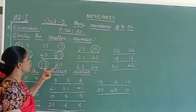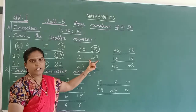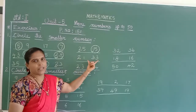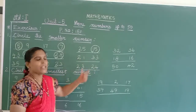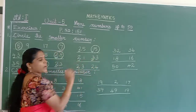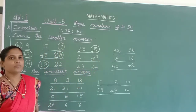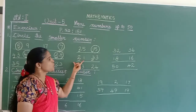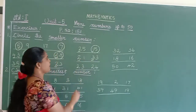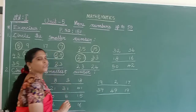Next one: 21 and 33. Both are 2-digit numbers. Come to the tens place: 2 and 3. Which is small? 2 is smaller than 3. So we should circle 21.